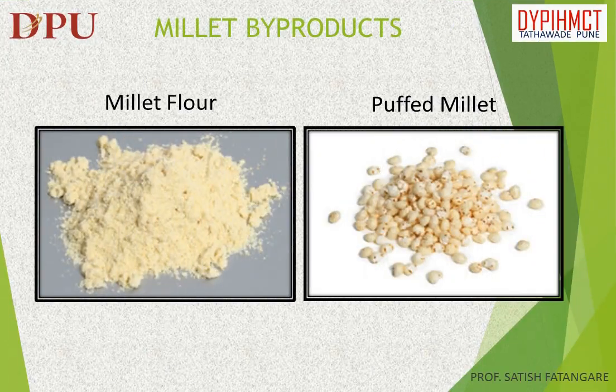In this slide we will discuss about the by-products of millet: millet flour, puffed millet, and finger millet — also known as African millet or ragi or nachni.